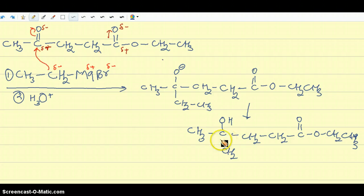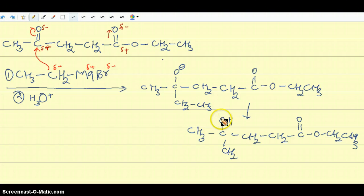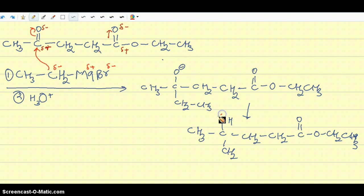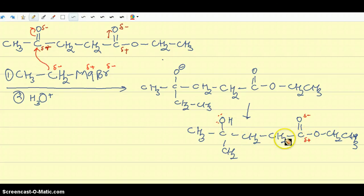This is a trick question because this intermediate product is formed but it's not the final product. The final product is a cyclic lactone. This is because there is still an electrophile in the reaction mixture — the oxygen in this product acts as a nucleophile and the ester carbonyl carbon acts as an electrophile, due to the partial positive charge on that carbon and partial negative charge on that oxygen.